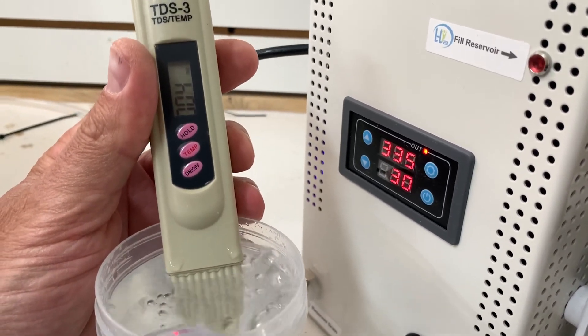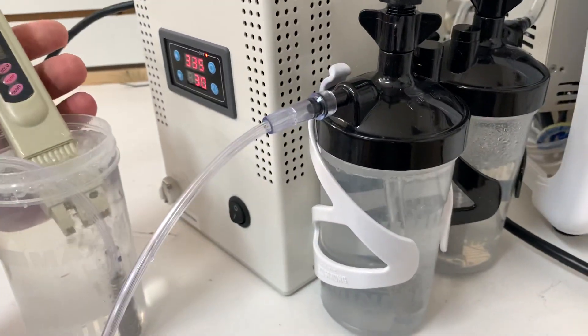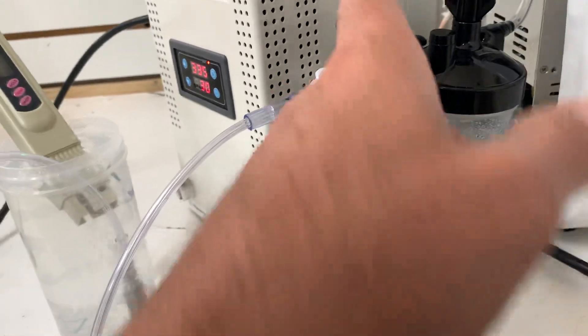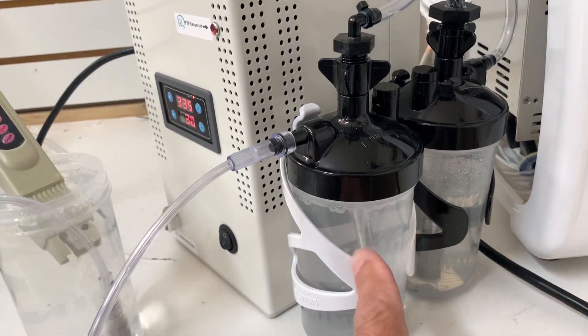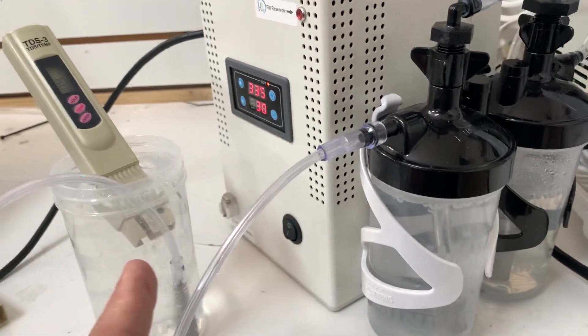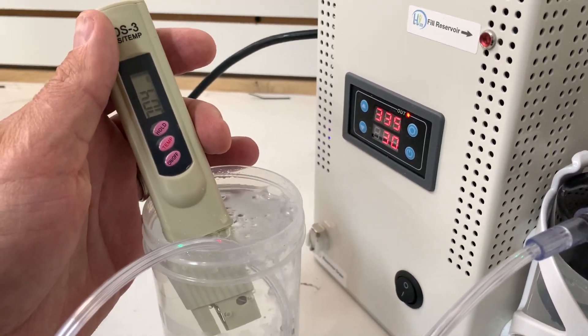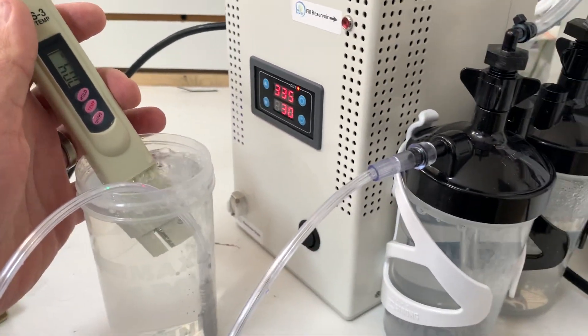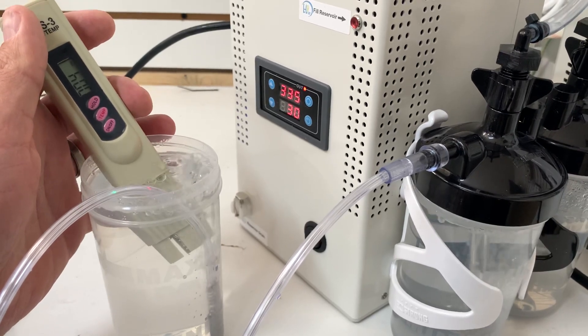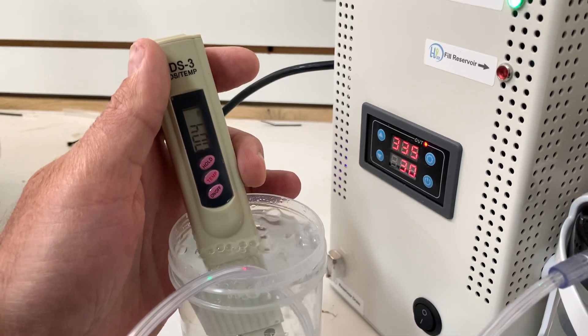And if your TDS goes up, it means that lye is being transferred from your machine into your bubbler, saturating the bubbler water, and now coming out into your drinking water. So what you want to do is run this for three or four hours, five hours, eight hours, ten hours, however long it takes to register a higher TDS.